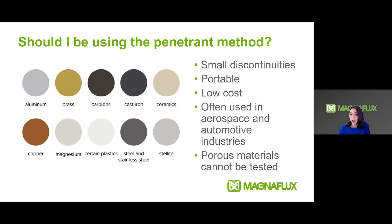Penetrant can be used for inspection to find defects that are open to the surface in any non-porous materials. These are only suggestions — you do need to be conforming to your specifications depending on what industries you are in. One disadvantage: it cannot be used following shot peening and sandblasting unless the material is acid etched to remove metal smearing.